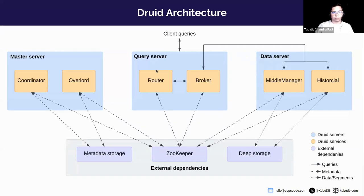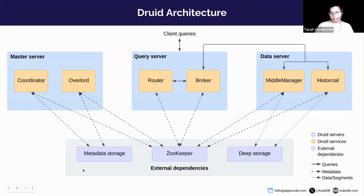Druid has several types of services organized across three kinds of servers: master, query, and data. The master server has two components — coordinator and overlord. The query server has router and broker nodes. The data server has middle manager and historical nodes. There are also three external dependencies shown at the bottom of the architecture diagram.